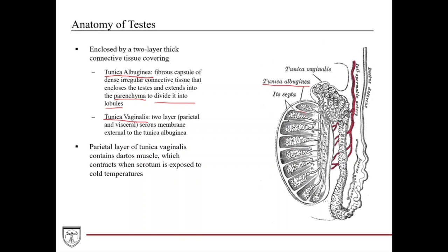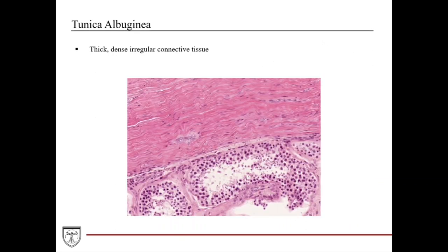Outside of the tunica albuginea is the tunica vaginalis, which is a two-layer serous membrane consisting of a parietal and a visceral layer. The parietal layer of the tunica vaginalis contains a muscle called the dartos muscle. This muscle contracts when the scrotum is exposed to cold temperatures, giving the scrotum a wrinkled appearance on the outside — for example, when a male enters very cold water. Again, this serves to help with ideal temperature control.